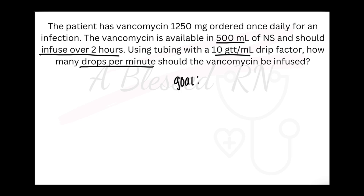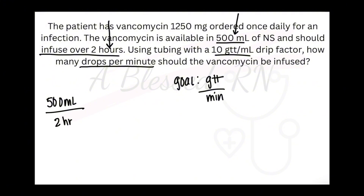Once again, our goal is to find drops on the top and minutes on the bottom. Is this asking us for grams, milligrams, or micrograms? No, it is not. So that ordered amount in milligrams is fluff — extra information that's important as an order but not going to help you solve the dosage calculation problem. Our volume is 500 mL over 2 hours to be infused, and our drop factor is 10 drops per mL.